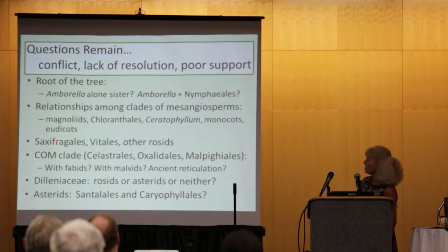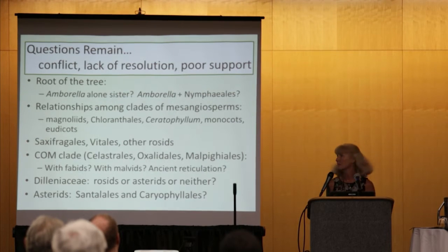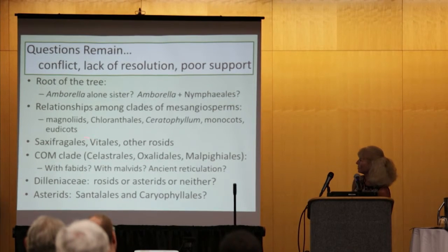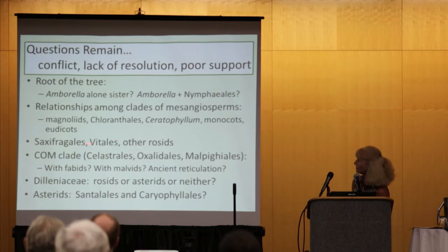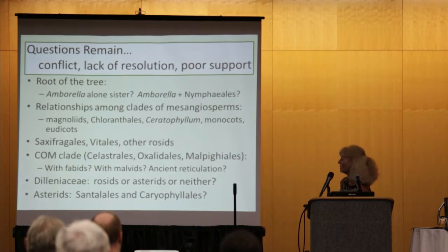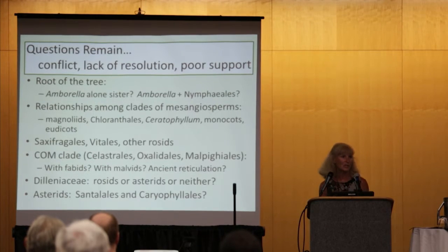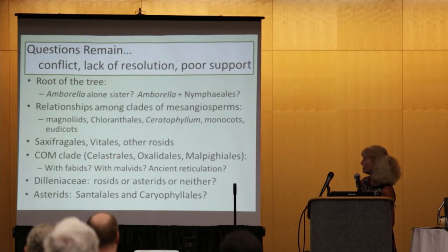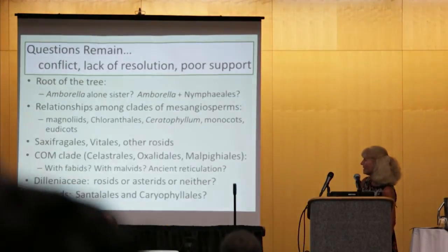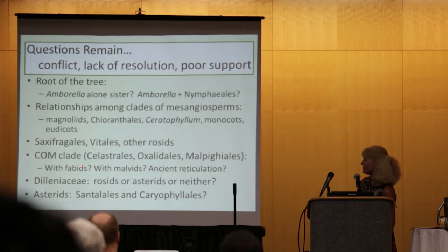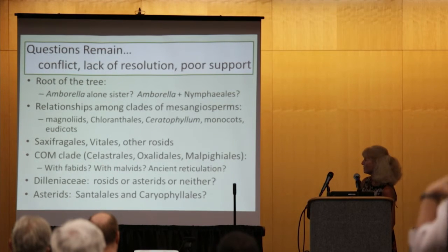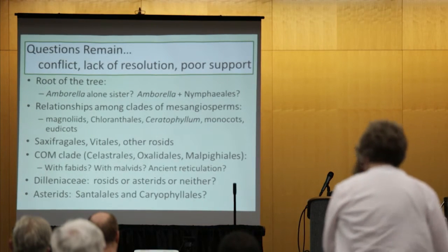There's also some question about the relationships of Saxifragales and Vitales with other rosids. Many analyses place Saxifragales as sister group to the rest, but other analyses have placed these as sisters to each other with that clade sister to the rosids. Another example is the COM clade, composed of Celastrales, Oxalidales, and Malpighiales. Plastid data have convincingly placed this clade with the fabids in the rosids clade, while mitochondrial and nuclear data have placed it with the Malvids.